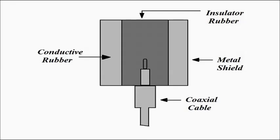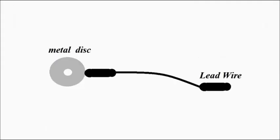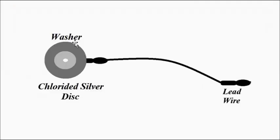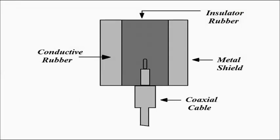These are the three types of electrodes used for EEG: the metal disc electrodes, the chlorided silver discs with soft washer, and the dry electrode. Please subscribe to the Engineering Tutorial channel for more videos related to electrical, electronics, instrumentation, and communication engineering. Thank you very much.